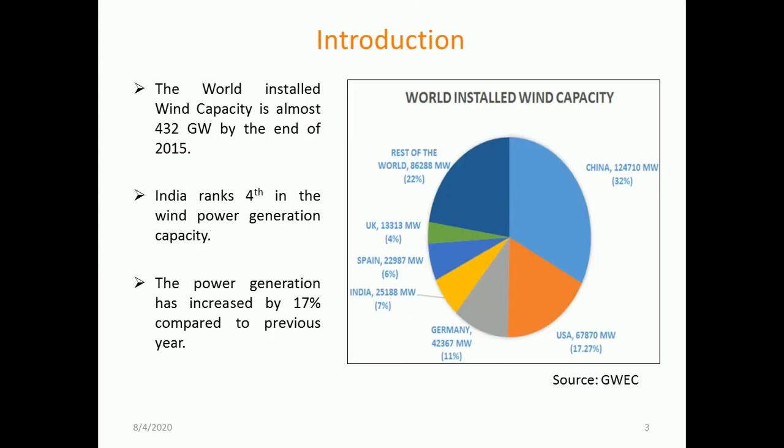We will begin by discussing the potential of wind energy. The world's installed wind capacity is almost 432 GW by the end of 2015. India, as of 2015-2016, ranked fourth in wind power generation capacity.